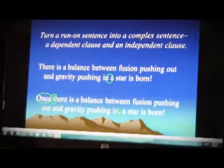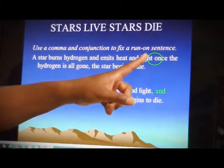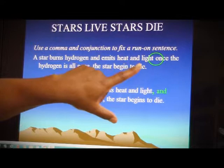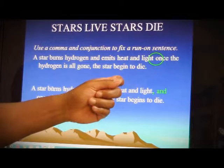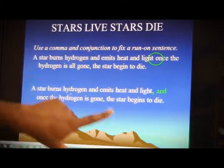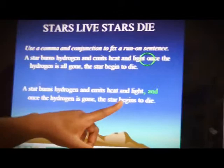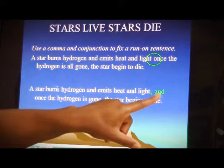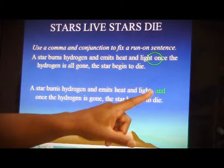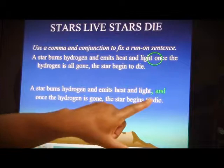Let's try it one more time — use the comma and conjunction to fix a run-on sentence. 'A star burns hydrogen and emits heat and light. Once the hydrogen is all gone, the star begins to die.' You want to use a comma and a conjunction. The conjunctions — FANBOYS: for, and, nor, but, or, yet, so. Put a comma first, then a conjunction: 'A star burns hydrogen and emits heat and light, and once the hydrogen is gone, the star begins to die.'